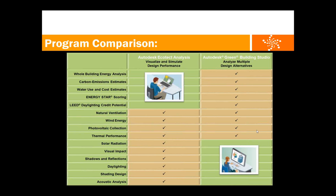One tool you'd use early on, looking at the whole big picture but very schematically. The other you can get very big picture as well, but also be more specific. Notice how the LEED daylighting credit potential is not checked by default — that doesn't mean you can't do it. You can actually get your LEED daylighting credits while using Ecotech.